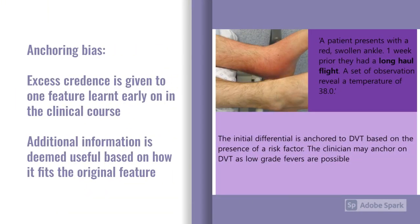The second one is anchoring bias, where you give more weight to a particular feature learned early on and then weigh up additional information based on how it fits with that original feature. For example, a patient has a red ankle and we learn they had a long-haul flight one week ago — immediately your initial differential anchors towards a deep vein thrombosis. As you assess the patient further and find they have a temperature, because you've anchored on DVT you attribute the fever to venous thromboembolism, to the detriment of other diagnoses.